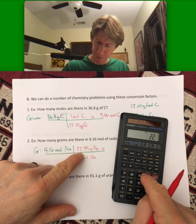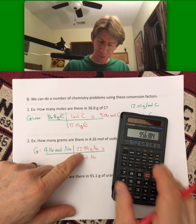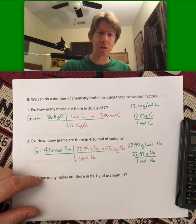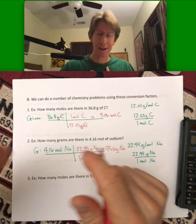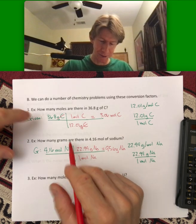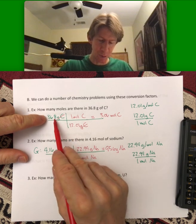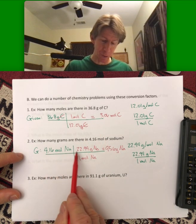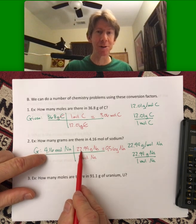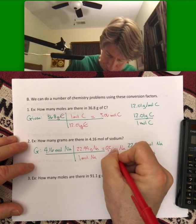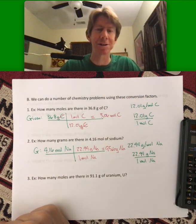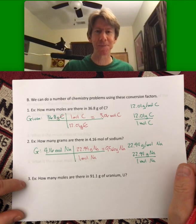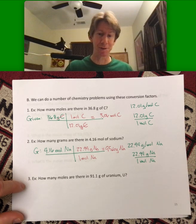4.16 times 22.99, 95.6 to 3 sig figs, grams of sodium. And, so, I, oftentimes, have problems with calculators. 36 divided by 12 should be about 3. So, that looks good. 4 times 20, 4 times 20 would be 80. Both of these numbers are a little bigger than that. So, that's fine. What I want you to do is, I want you to do problem number 3 on your lecture notes, so that I can grade it later, as part of your lecture notes.